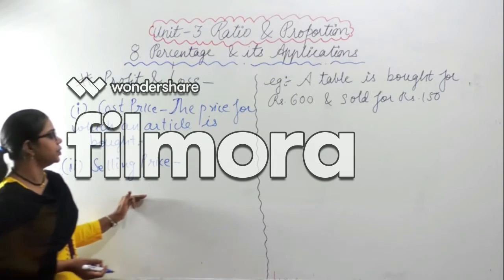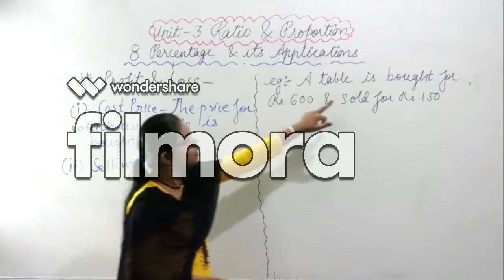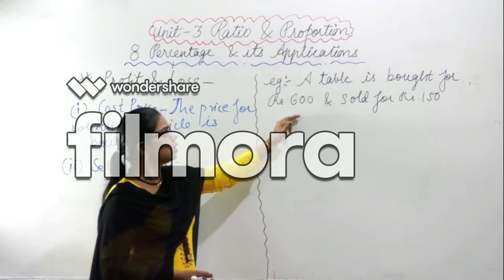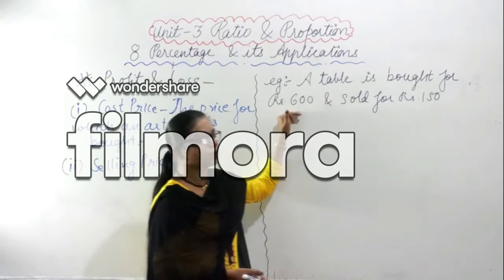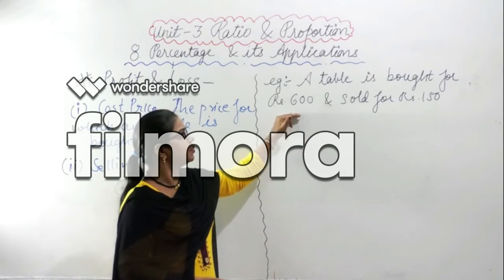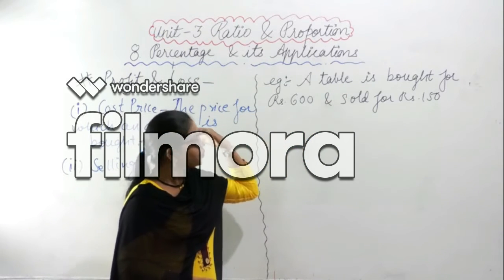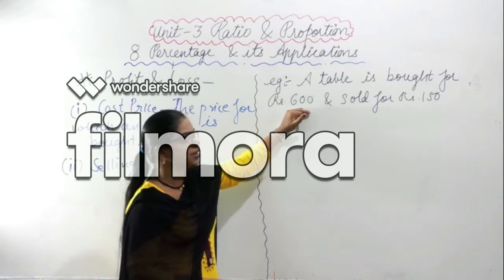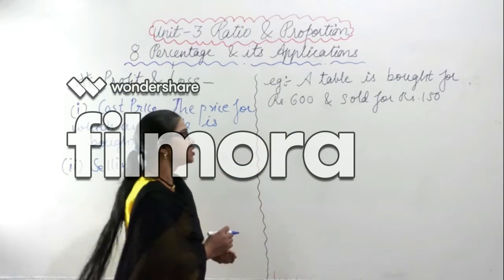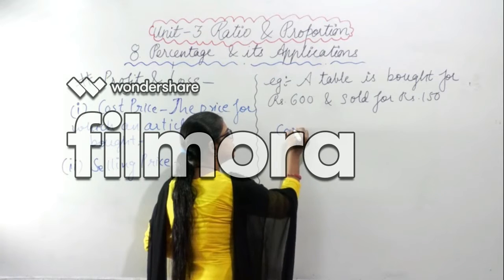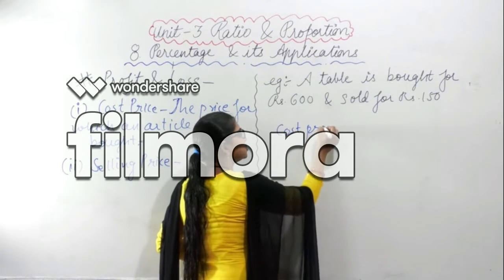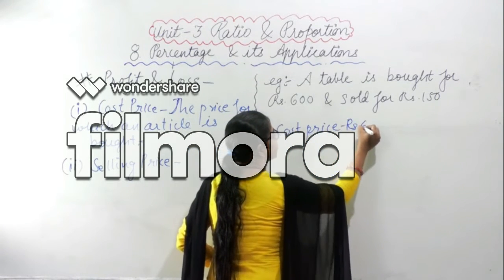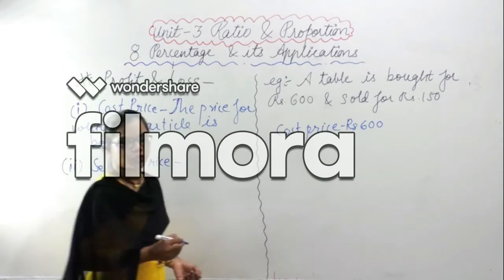For example, a table is bought for Rs. 600. So what is the cost price? The table is bought for Rs. 600 — suppose you went to a market and bought a table at Rs. 600 — so 600 will be the cost price.